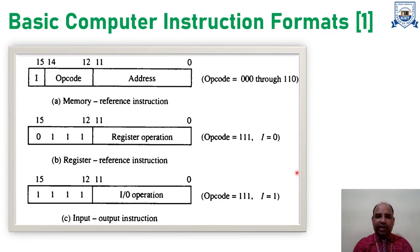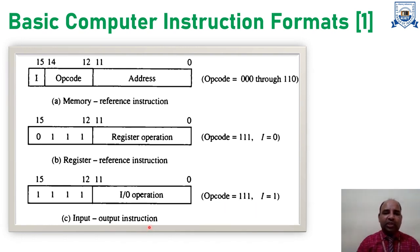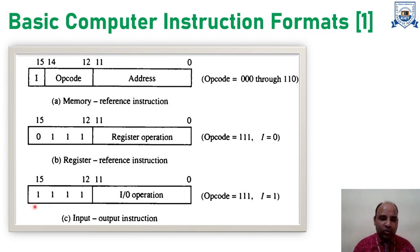The differentiating factor between register reference instruction and input-output instruction is the value at bit number 15. If it is 0 — with opcode triple 1 — then it is a register reference instruction. If it is 1, then it is an input-output instruction.